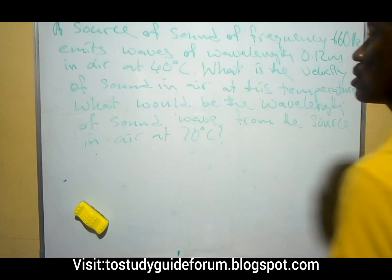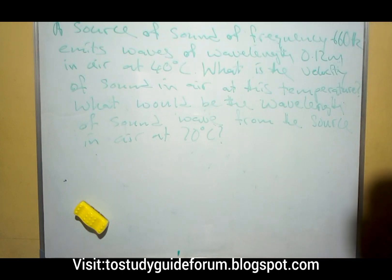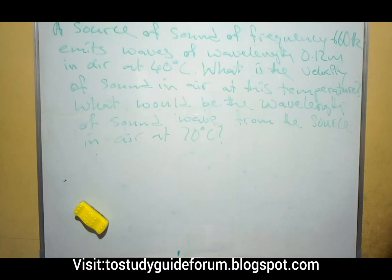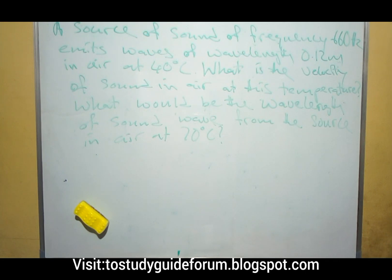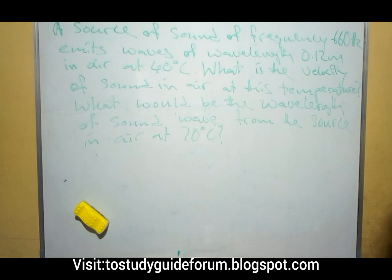Hello everyone, welcome to Study Guides Forum. We have a question here we want to look at: how to calculate the velocity and wavelength. The question says the source of sound of frequency 660 Hz emits waves of wavelength 0.12 meter in air at 40 degrees Celsius. What is the velocity of sound in air at this temperature? What would be the wavelength of the sound wave from the source in air at 70 degrees Celsius?